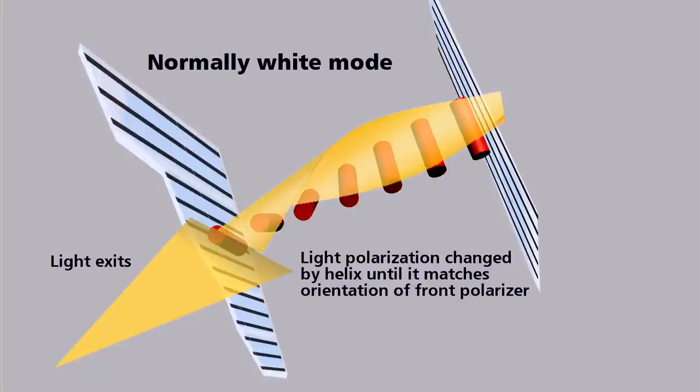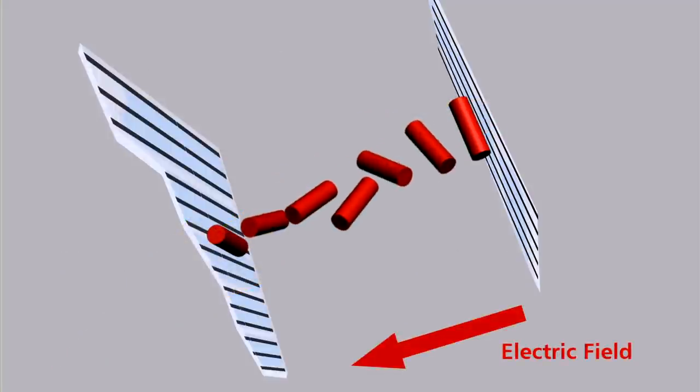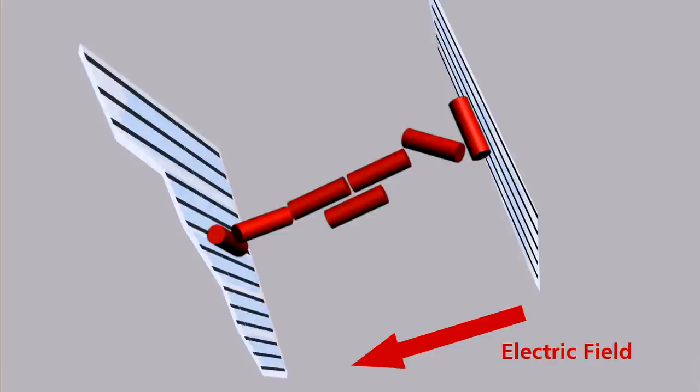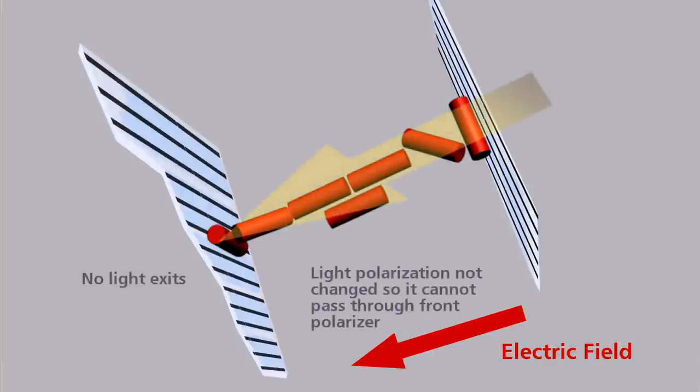Applying an electric field across a sandwich causes the crystals to line up lengthwise. Now, the light that passes through the front polarizer is not rotated by the crystals and can no longer pass through the front of the screen. We call this the normally black mode.